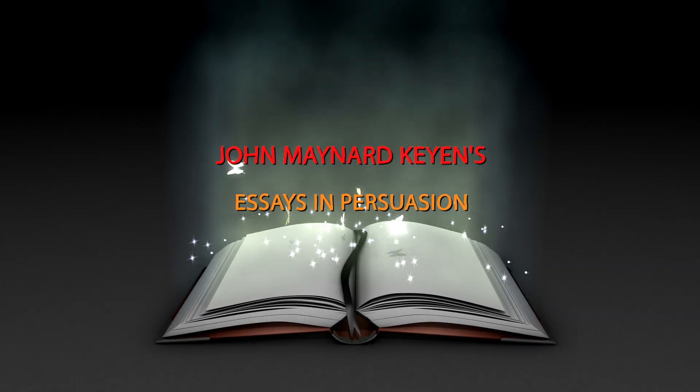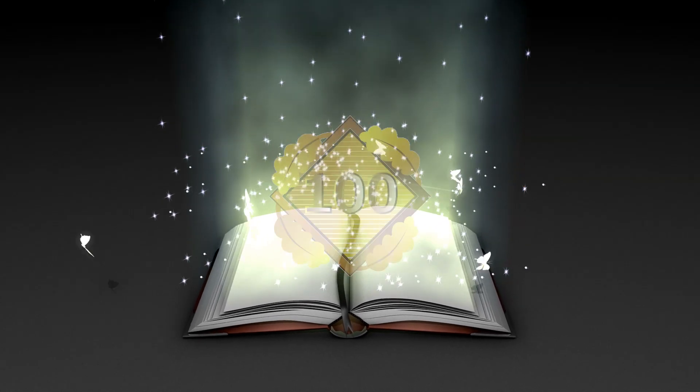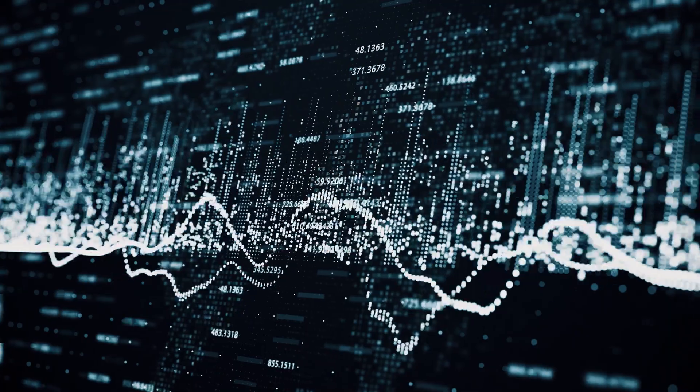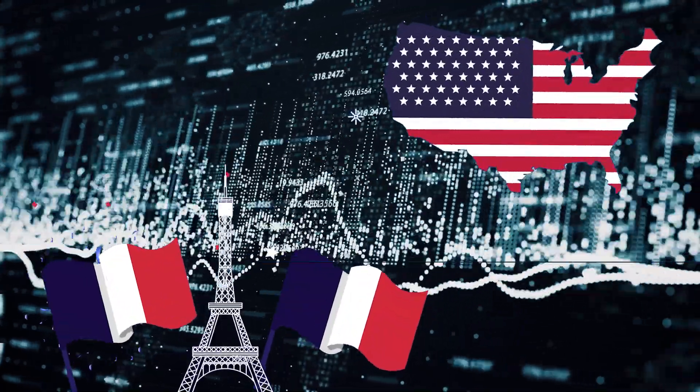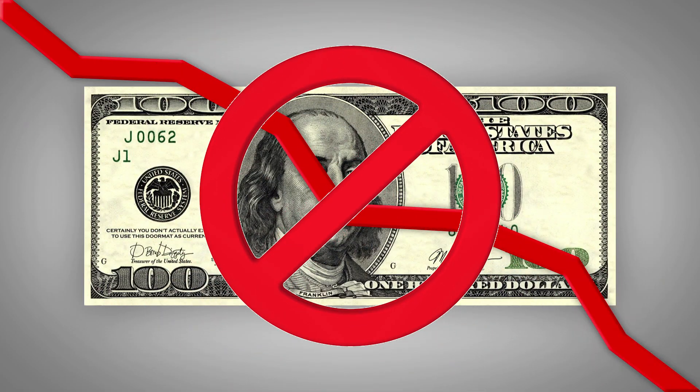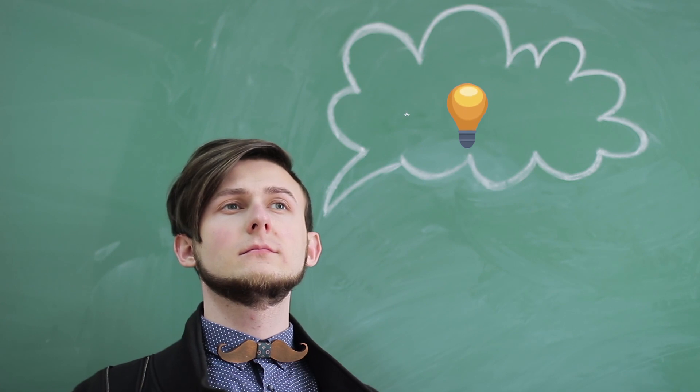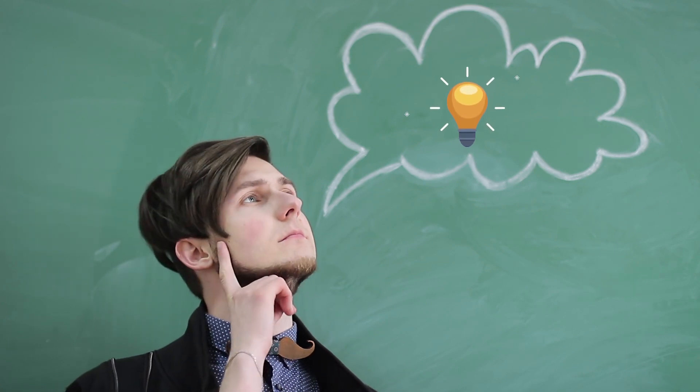John Maynard Keynes' Essays in Persuasion is a top 100 book. This volume contains Keynes' public persuasion efforts from 1919 until 1940. Keynes predicted the economic swings that befell Europe and the U.S. with astonishing precision and advocated solutions that, if followed, may have prevented a worldwide slump. Keynes' ideas on Soviet Russia, the fall of laissez-faire, and economic growth are still relevant today.